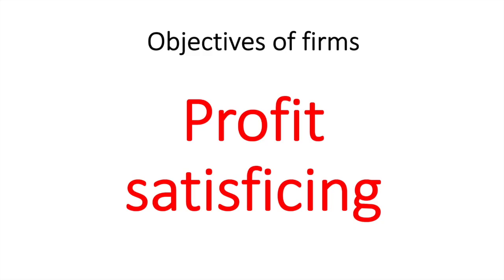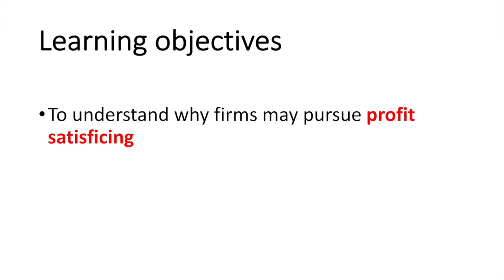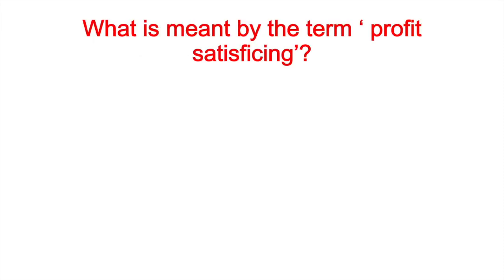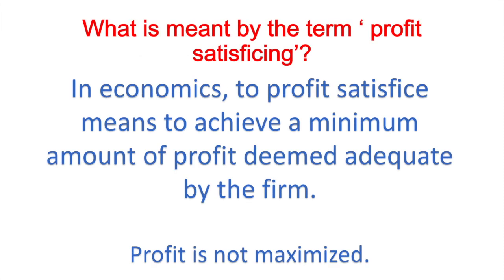In this video, we'll focus on the objective of satisficing. In economics, profit satisficing means to achieve a minimum amount of profit deemed adequate by the firm. It is not maximum profit but an acceptable level below that. I'll clarify what is meant by acceptable in the next section.